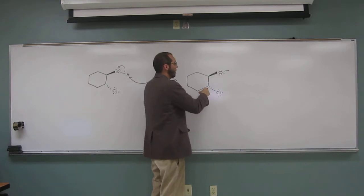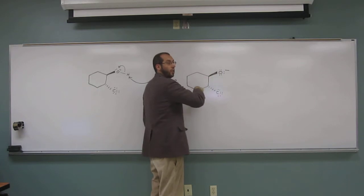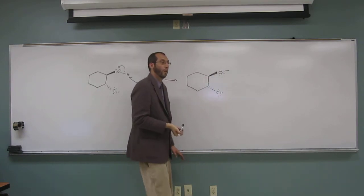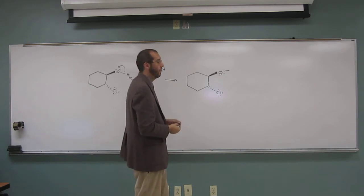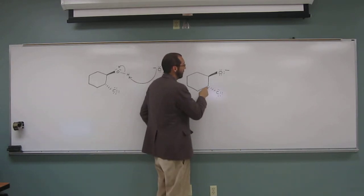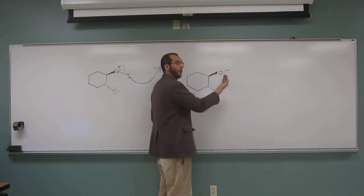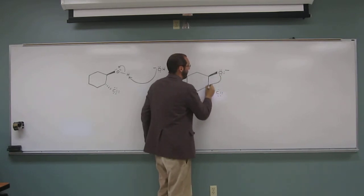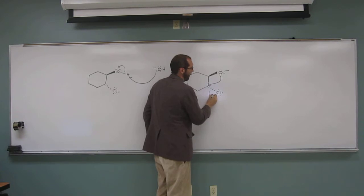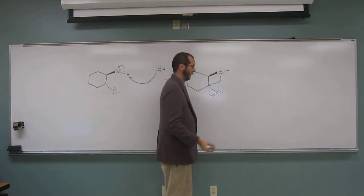Hopefully you see that this arrangement is such that these two substituents are on opposite sides of the ring. Remember when we named it, it was trans. One, two. Since this is on the opposite side of the ring, the antibonding orbital is right there. So we can do an SN2 reaction really quickly here. What we'll do is attack right there, SN2, good leaving group like that.